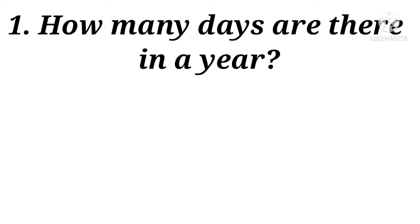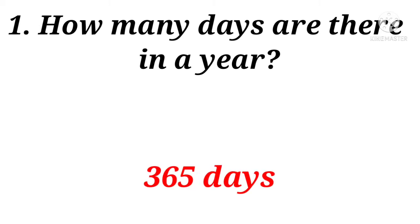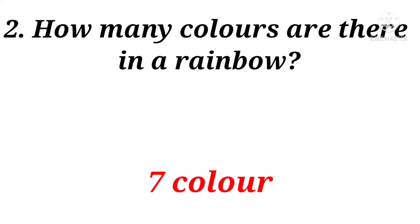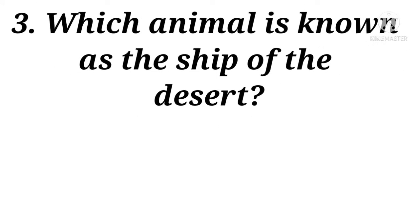First question: how many days are there in a year? Right answer: 365 days. Second question: how many colors are there in a rainbow? Right answer: seven colors. Third question: which animal is known as the ship of the desert? Right answer: camel.